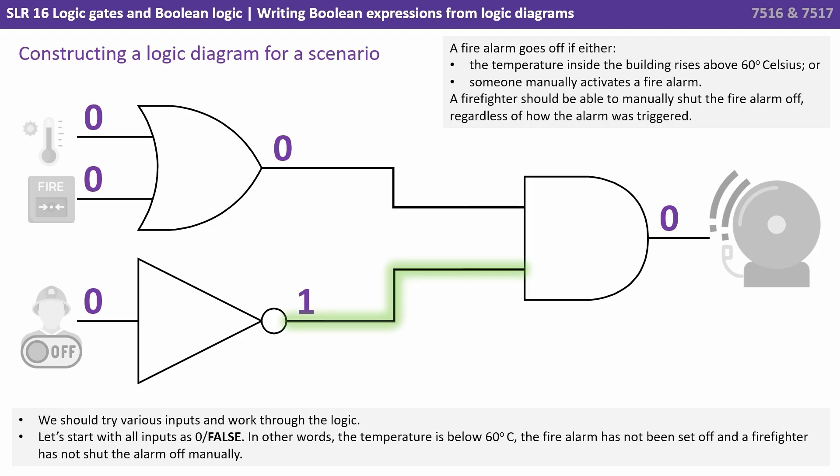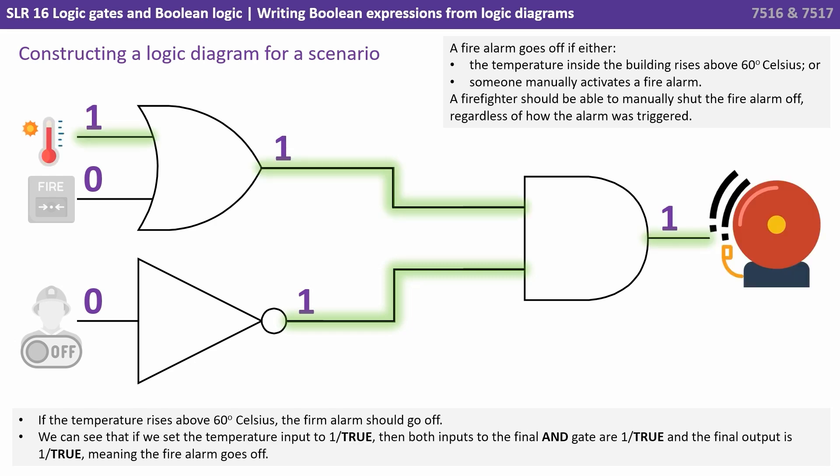We should try various inputs and work through the logic. Let's start with all inputs as zero or false. In other words, the temperature is below 60, the fire alarm has not been set off and a firefighter has not shut the alarm off manually.